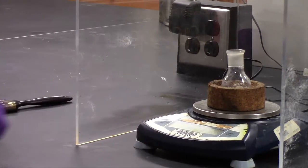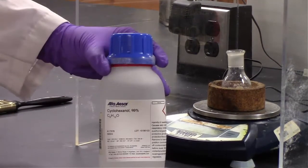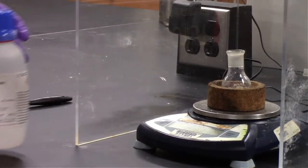In the lab, we're going to start by taking our 25-milliliter round-bottom flask and adding one of the starting materials, cyclohexanol.